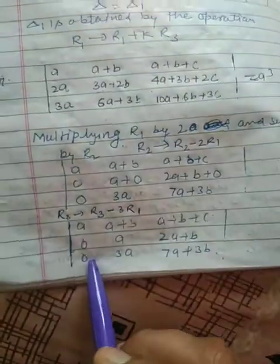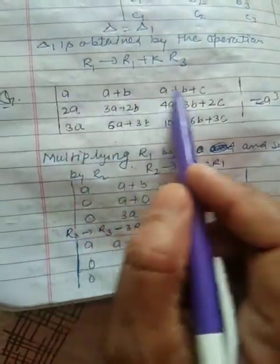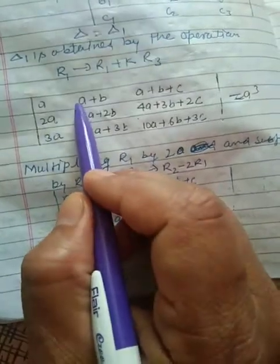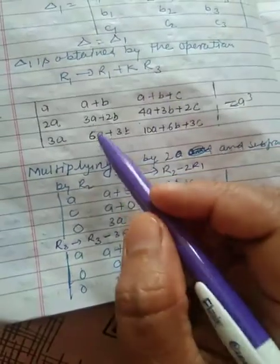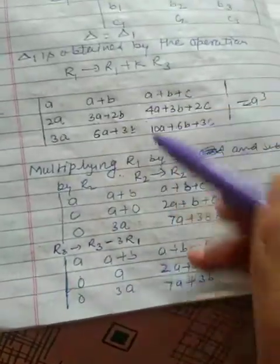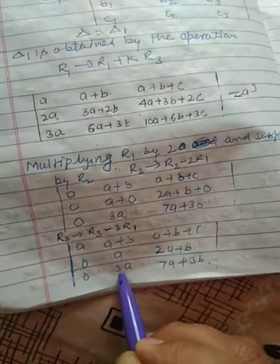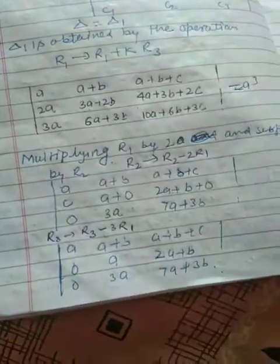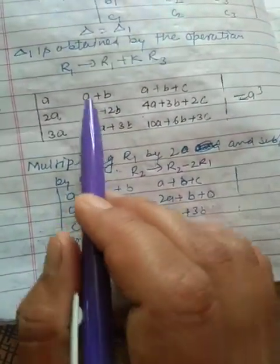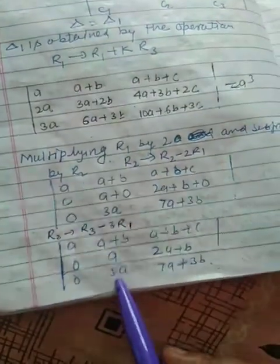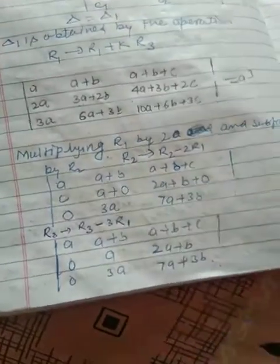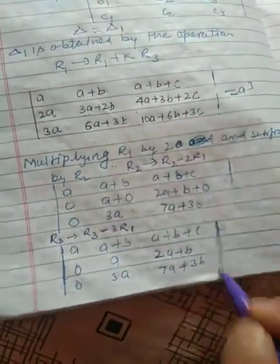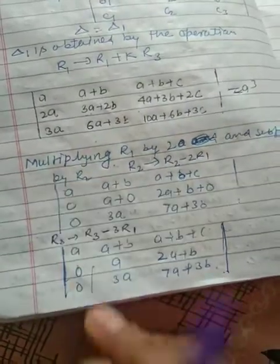Similarly, I am applying R3 → R3 - 3R1. So it is 0. We multiply the first row by 3: 3a, 3a+3b, 3a+3b+3c. Now we subtract: 3b to 3b cancel out; 6a - 3a = 3a, 3a, 3b, 3c. Then subtract, you will get this.